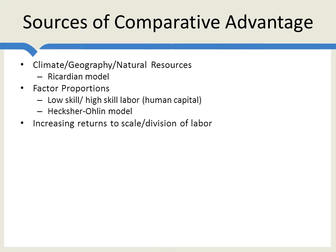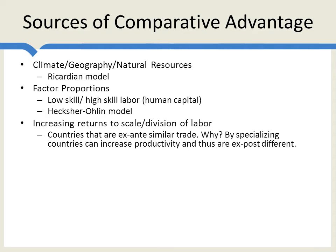Increasing returns to scale in the division of labor is another source of comparative advantage. And this one is interesting because it's a source of comparative advantage which may be created by trade rather than existing naturally before trade. The focus on models with increasing returns to scale came about when people realized that countries which are ex-ante quite similar trade quite a bit. So the biggest trading partner for the United States is Canada, which looks a lot like the United States. Developed countries, in general, trade most with other developed countries.